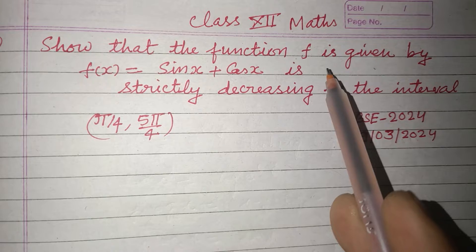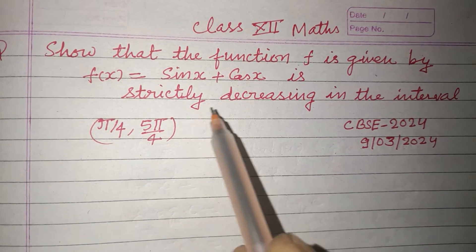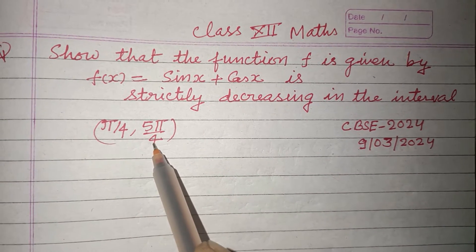Show that the function f given by f(x) = sin x + cos x is strictly decreasing in the interval π/4 to 5π/4.